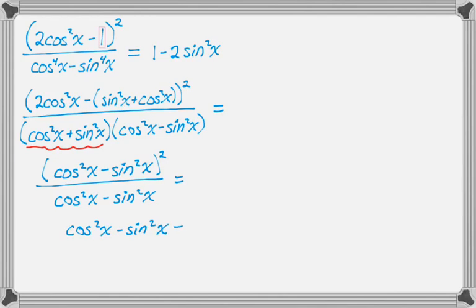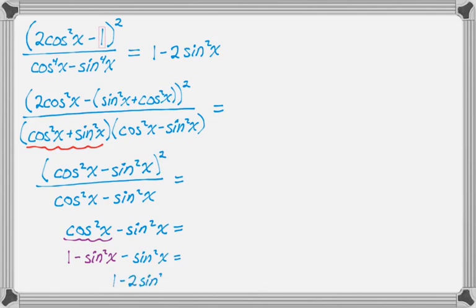Now I want to get 1 minus 2 sine squared, so I need to get rid of this cosine squared. I'm going to replace cosine squared with 1 minus sine squared. So I have 1 minus sine squared minus sine squared, and if I combine those, I get 1 minus 2 sine squared, which is the original right-hand side — so we verified it.